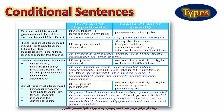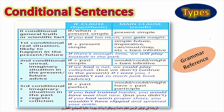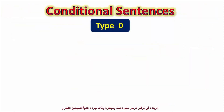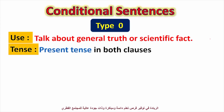How many types do we have? We have zero conditional, first conditional, second conditional, and third conditional — so four types in total. You can find these in the grammar reference at the end of your student book. Let's start with type zero. We use it when we talk about general truths or scientific facts.